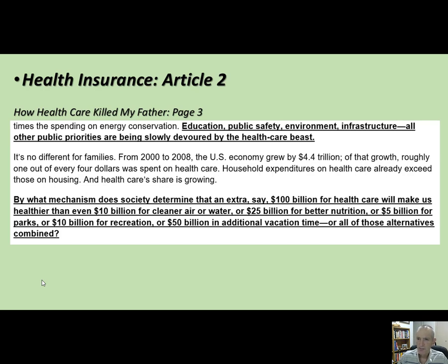He's asking if there are better places to spend our money than on surgeries, heart treatments, prostate cancer treatments, and mammograms—areas where evidence shows we're overspending. Could we spend money on education, public safety, environment, and infrastructure? Why does society determine an extra $100 billion for healthcare will make us healthier than $10 billion on clean air or water—like fixing Flint, Michigan—or $25 billion on better nutrition, $5 billion on parks, or $10 billion on recreation, more vacation time, making cities more bike-friendly?